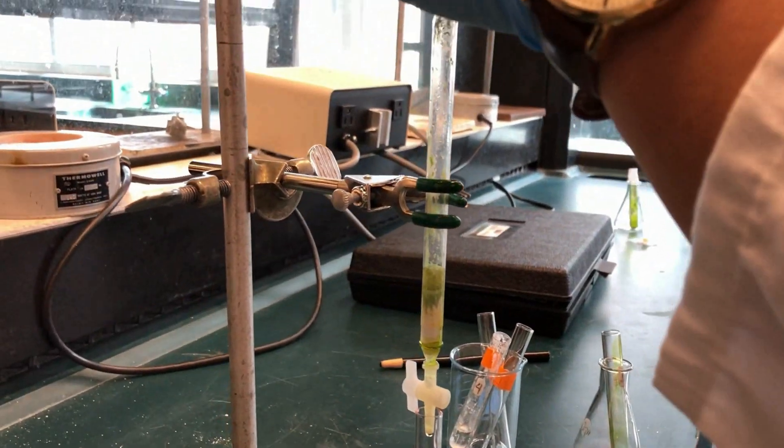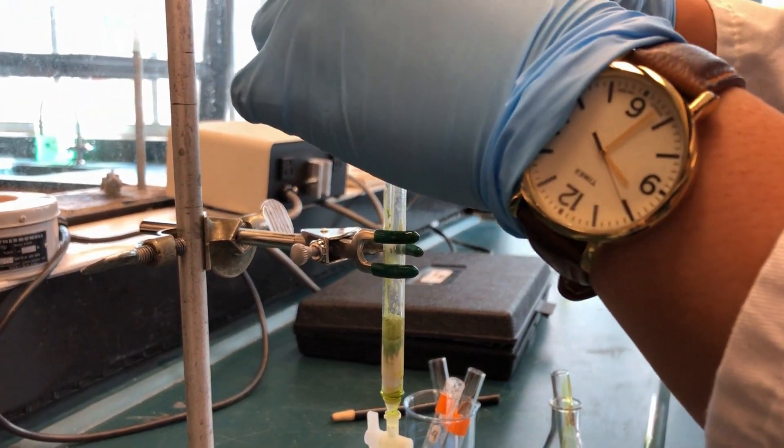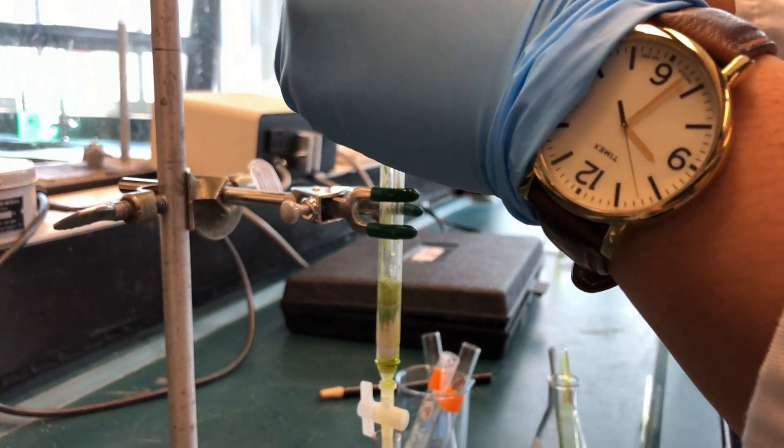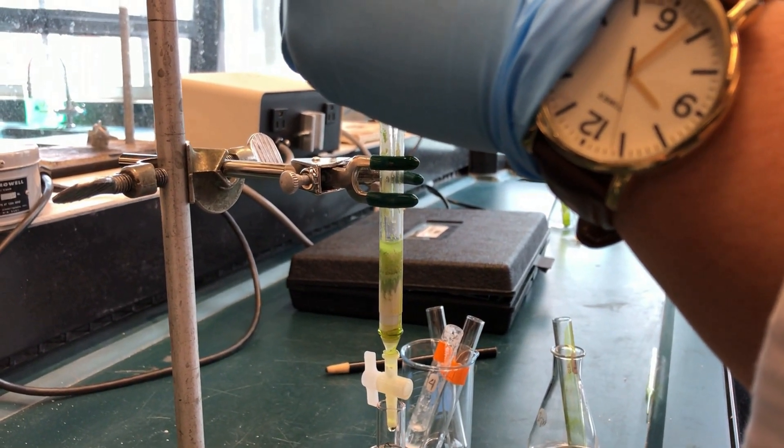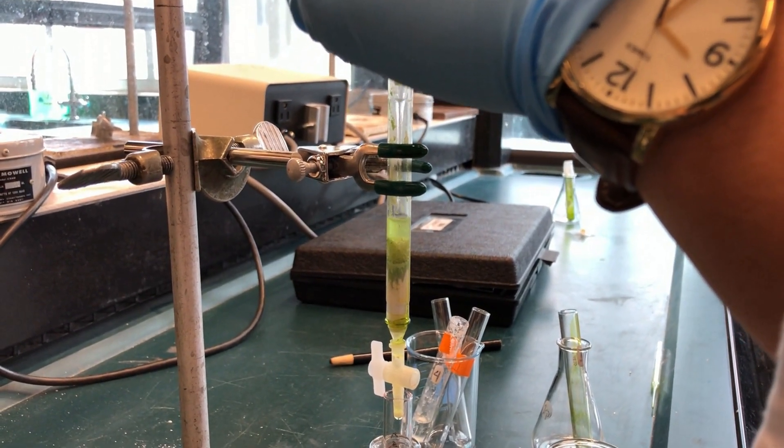If the yellow band does not separate from the green band, then change to a more polar solvent such as the 70-30 petroleum ether until the yellow band passes through the column.